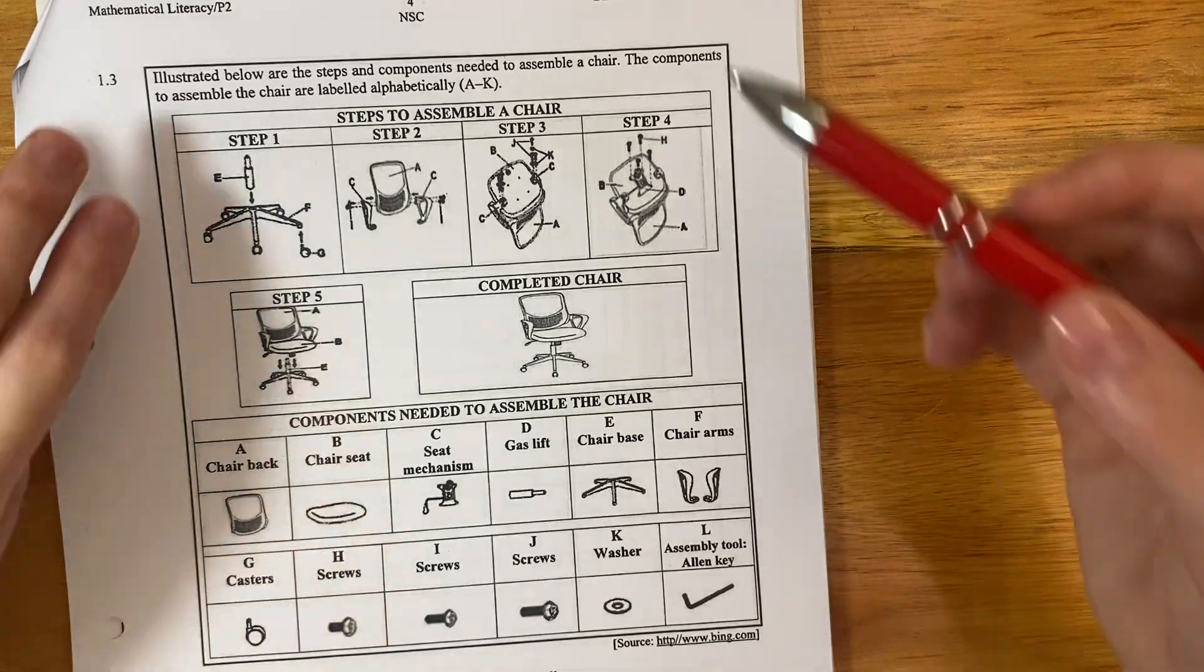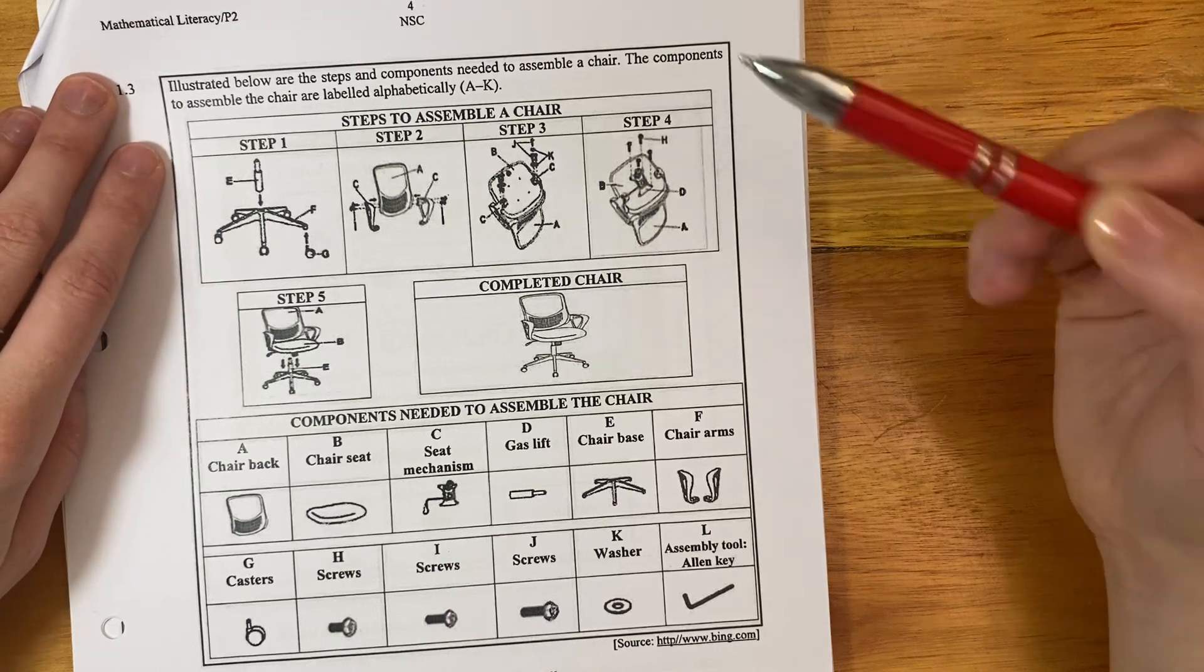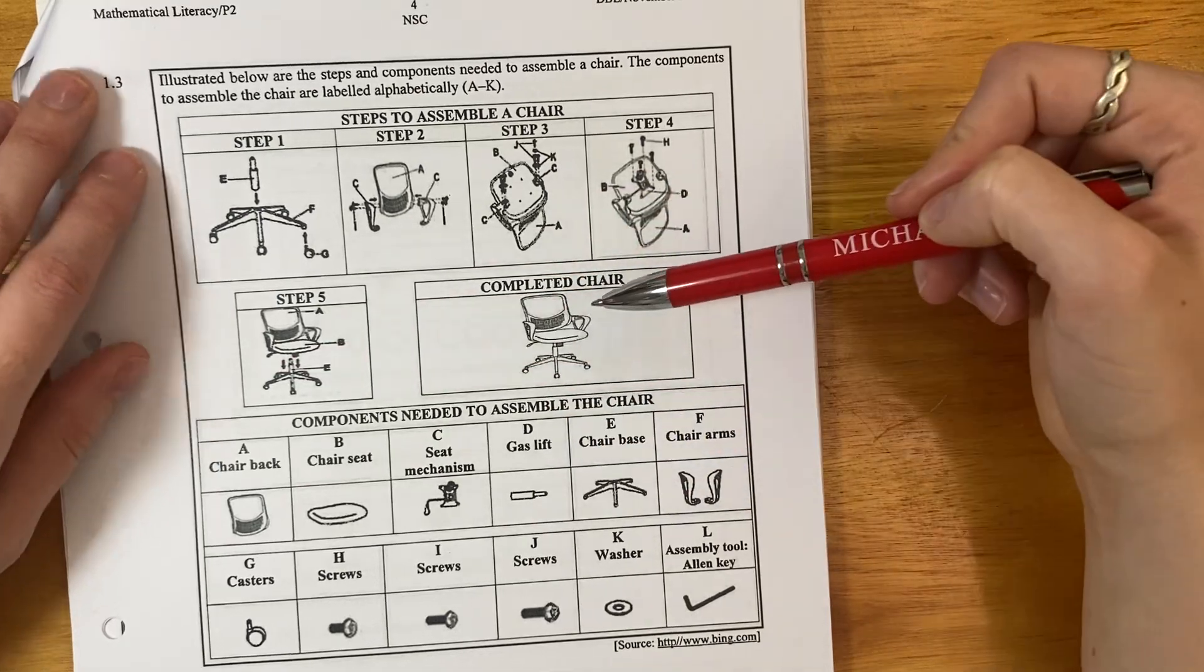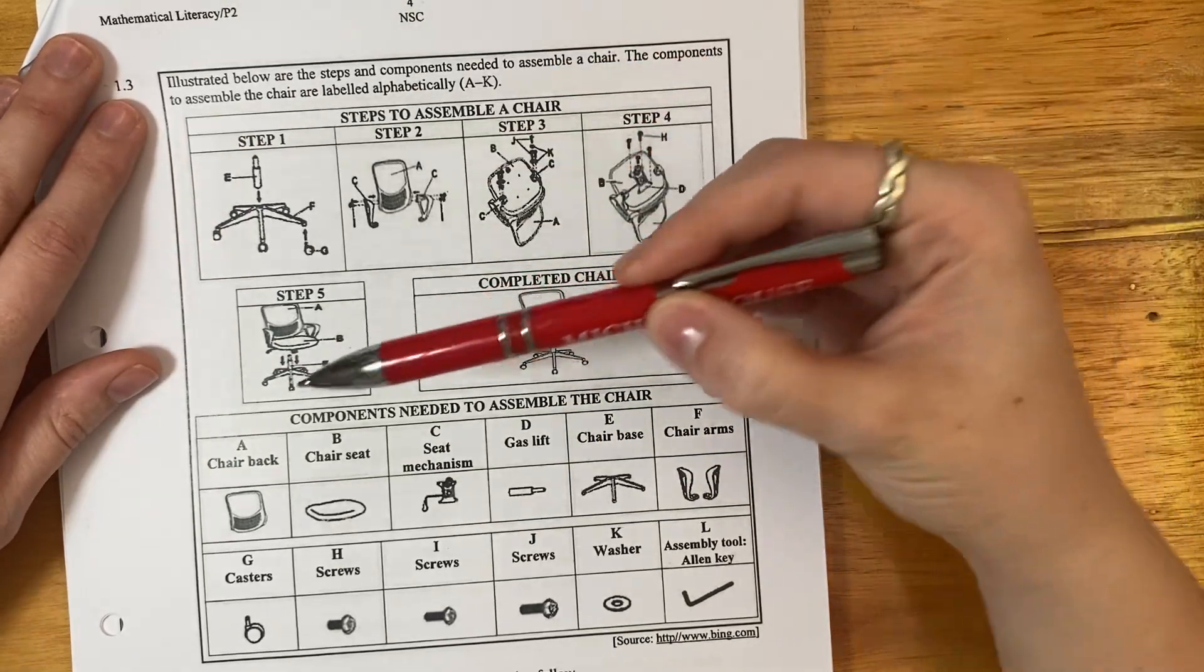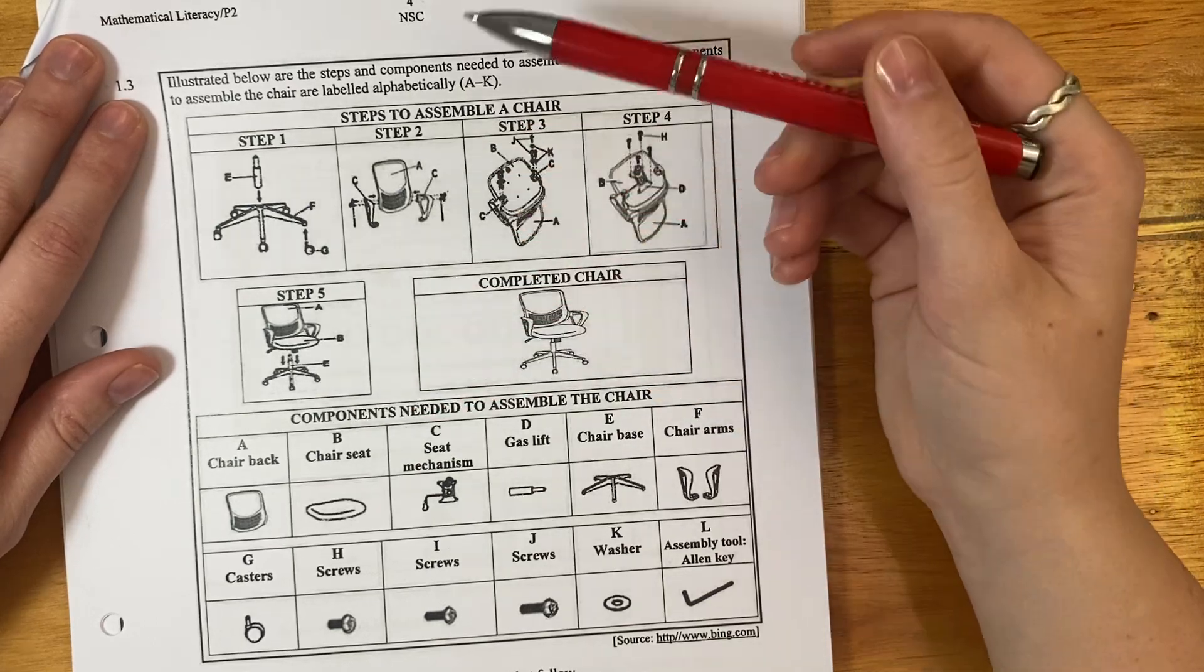Illustrated below are the steps and components needed to assemble a chair. The components to assemble the chair are labeled alphabetically. So here's the steps, which I probably wouldn't be able to follow in reality. And then here's all the parts, these are the components. Components basically just means parts.